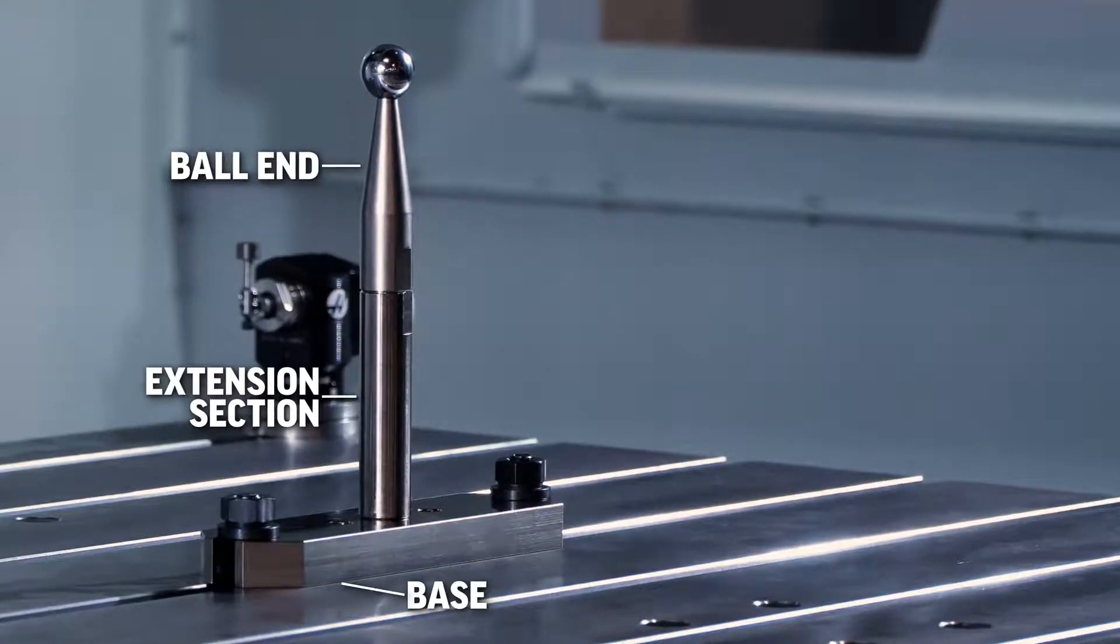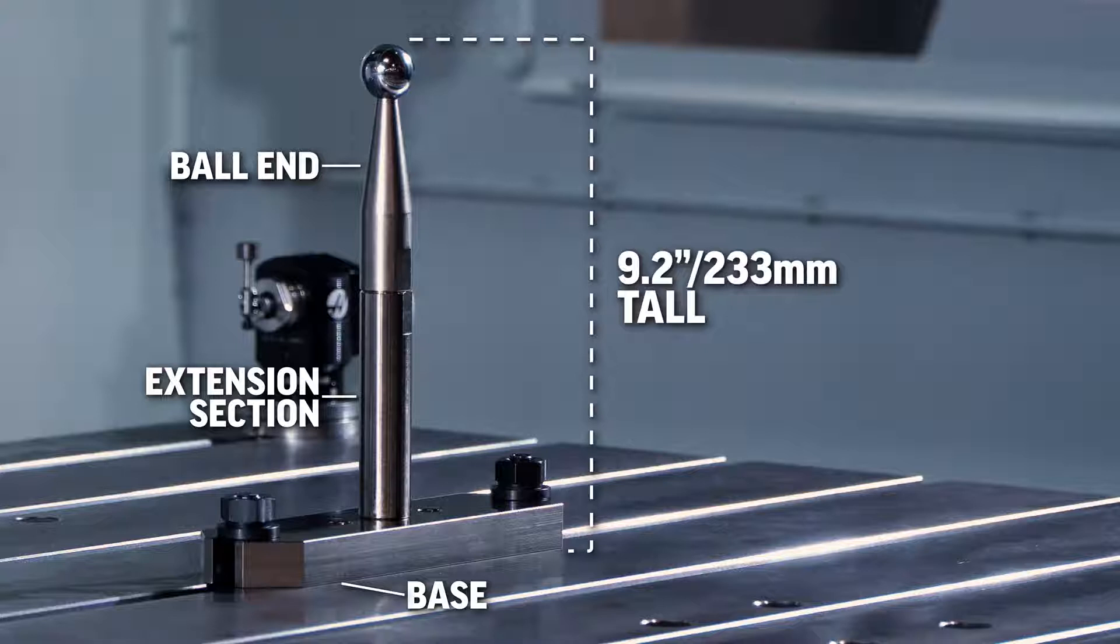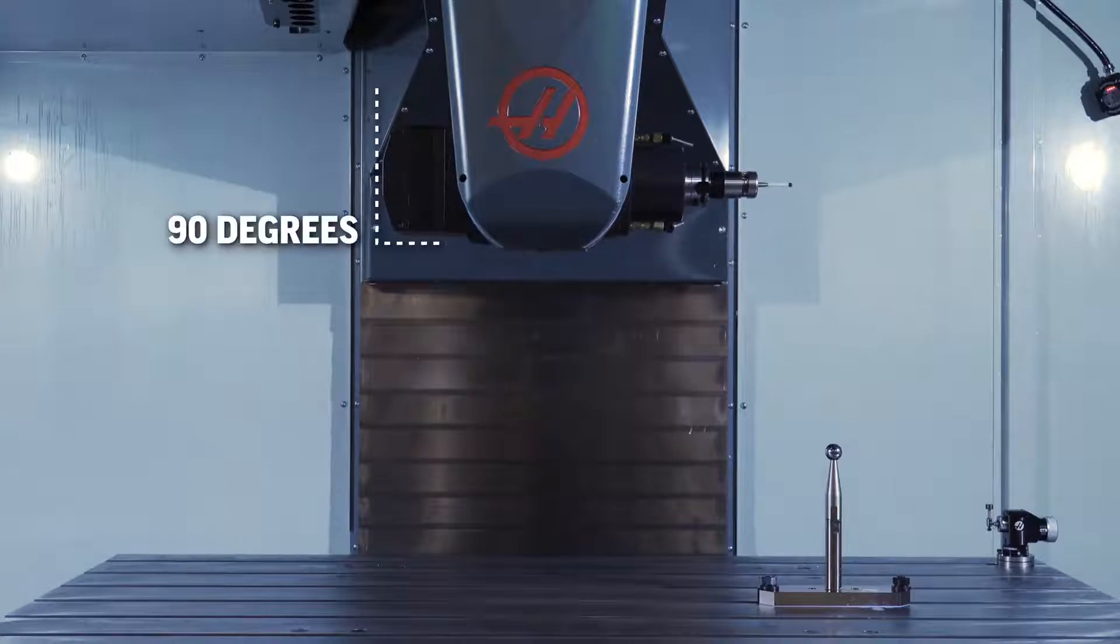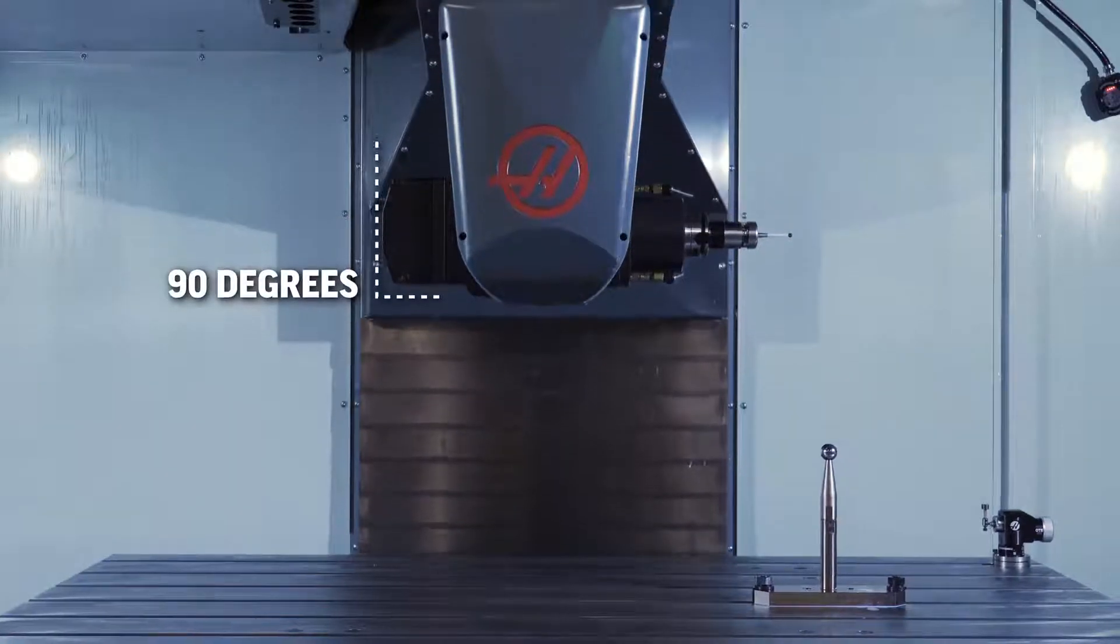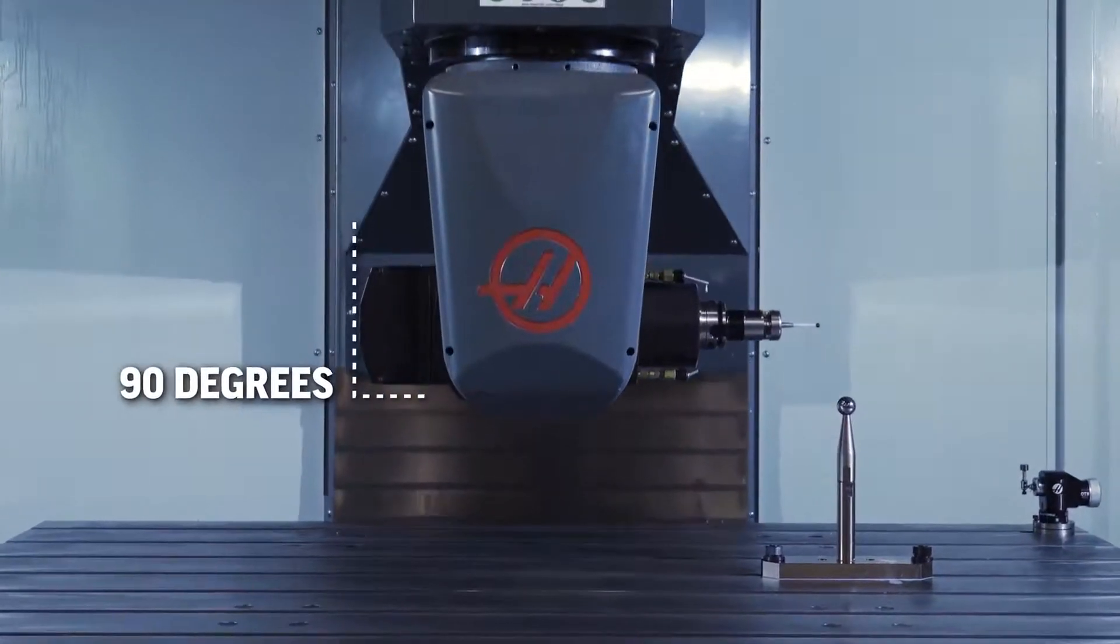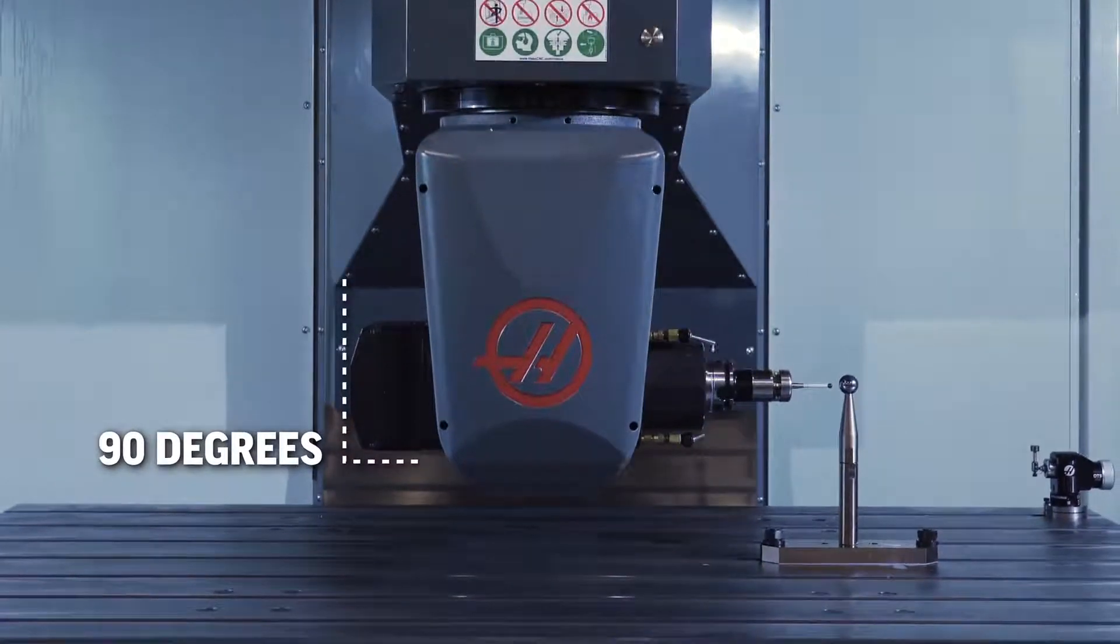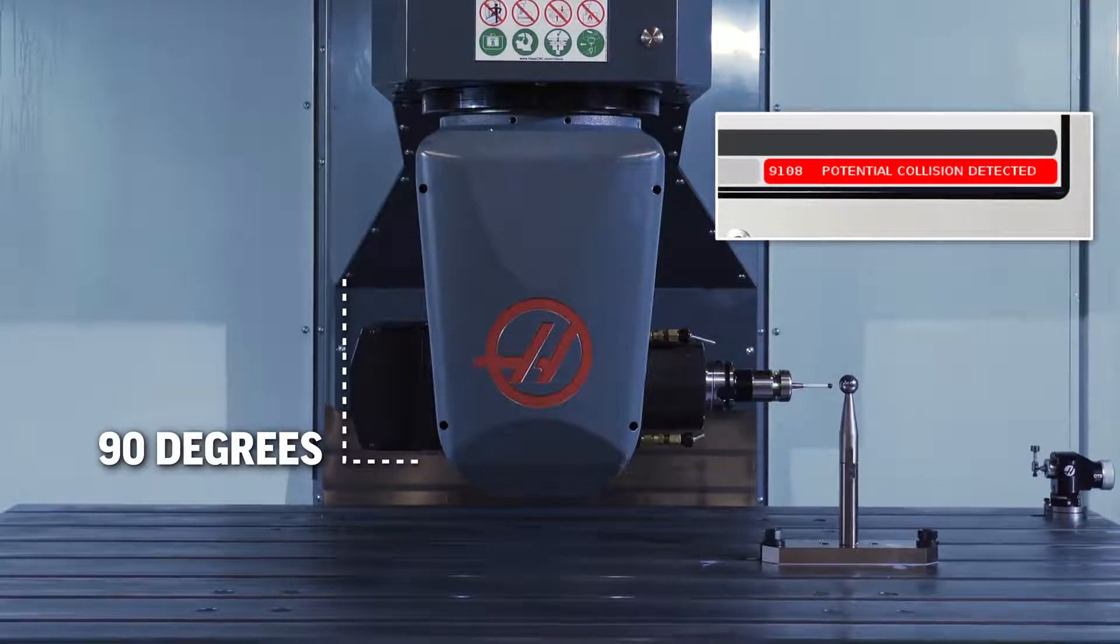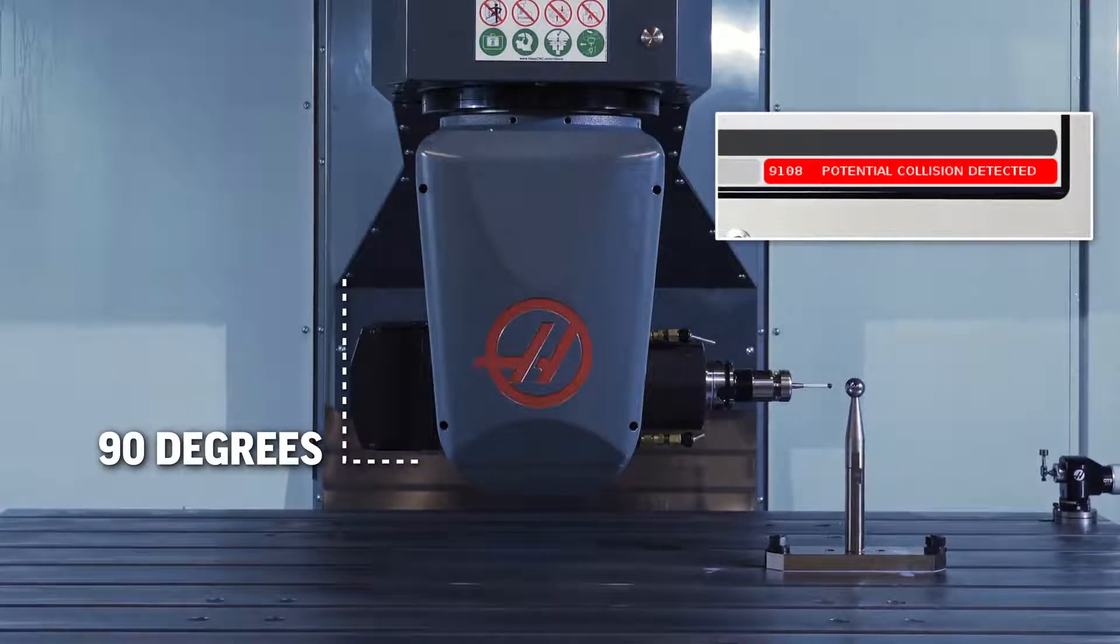Make sure you leave the base extension section and the section with the ball on it so it stands roughly 9.2 inches or 233 millimeters tall. This is very important because the head on the machine is going to tilt over 90 degrees and probe the ball in that position. If you don't have the ball at the right height, you will get a potential collision detected alarm.